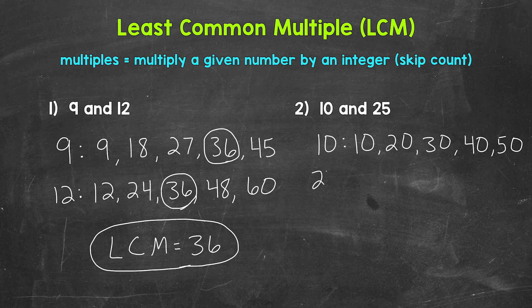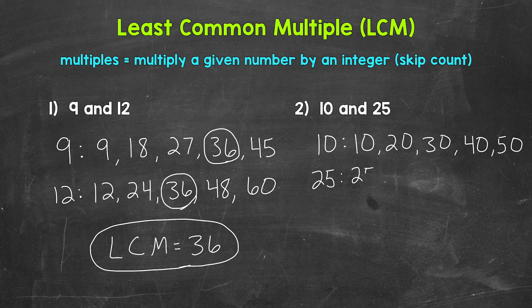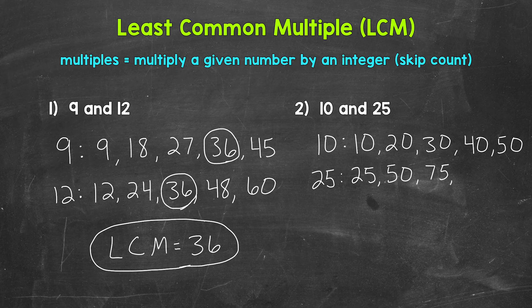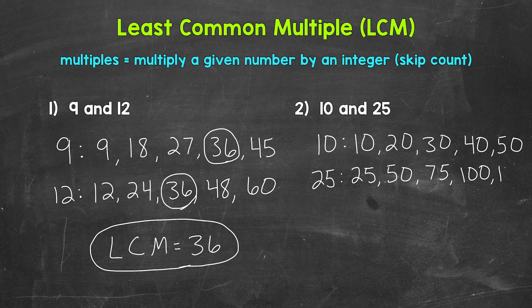Now let's list the first 5 multiples of 25. So 25 times 1 is 25, 25 times 2 is 50, 25 times 3 is 75, 25 times 4 is 100, and 25 times 5 is 125.